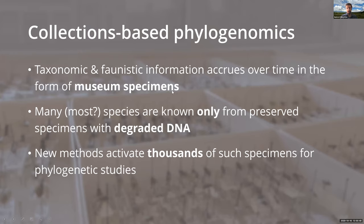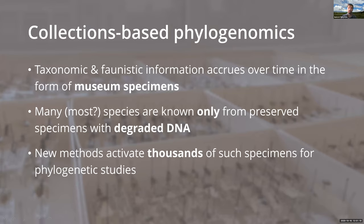The core issue is this: most of the information we have about these things — taxonomic and faunistic information, that is distributions, phenologies, and ecological information — accrues over time in the form of museum specimens slowly and gradually, not as the result of one or two expeditions to collect fresh material. So many, maybe even most species, wind up being known only from preserved specimens with relatively degraded DNA, which is an obstacle for molecular research. But new methods are increasingly making it possible to recover genomic data from such specimens, even very old specimens with quite degraded DNA.